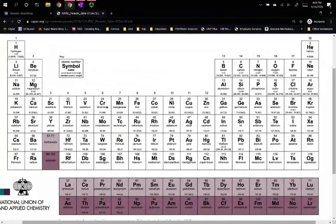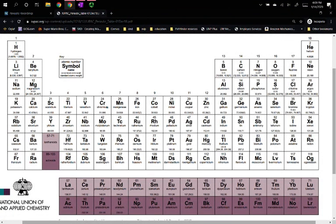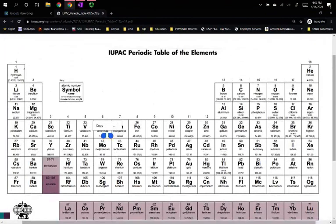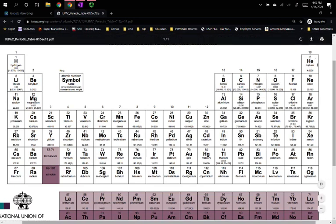This is the periodic table of elements. We can see way over on the top left, let me highlight it. Way over on the top left is the H symbol. That is hydrogen. Goes all the way across to the right. There's the HE symbol on the top right. That is helium.